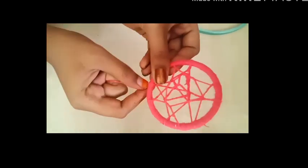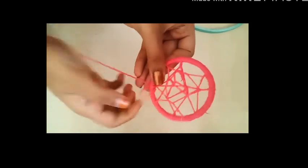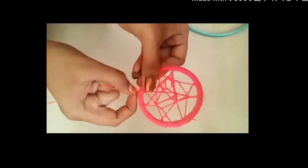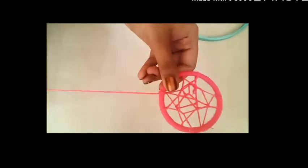You can cut the thread now. Then put the quilling paper and roll it. I will use the quilling paper for the bangle.